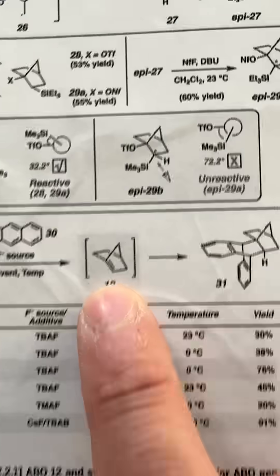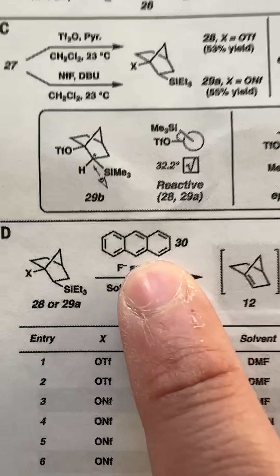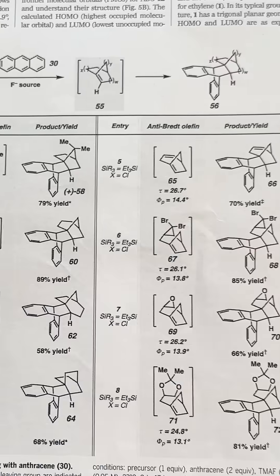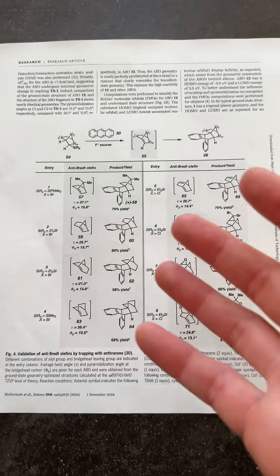But this is so unstable that you have to trap it with a molecule like anthracene, which forms this, which you can finally isolate. This method can make this, and this, and this, and all of these guys, and potentially lots of other very useful molecules. This is a reminder that rules in science can be broken. You just have to do the right experiment.